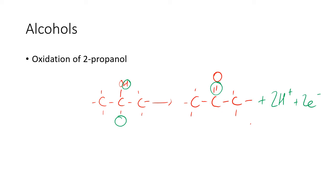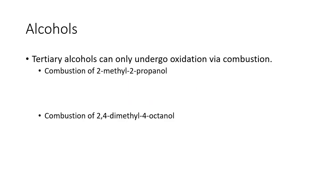In terms of tertiary alcohols, tertiary alcohols can only undergo oxidation via combustion. They cannot undergo oxidation via a strong oxidation agent. Well, oxygen is a strong oxidizing agent, but they can only undergo combustion. They don't form anything else when they undergo oxidation. Let's look at the combustion of 2-methyl-2-propanol, your smallest tertiary alcohol.